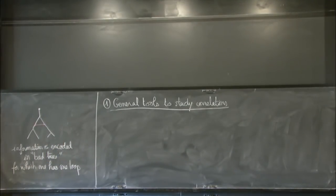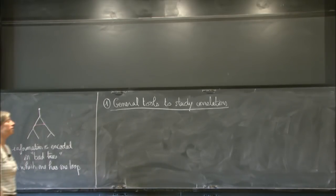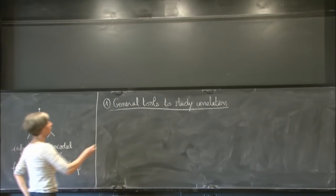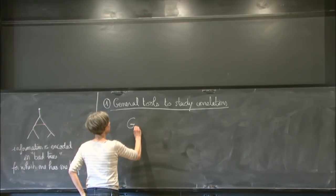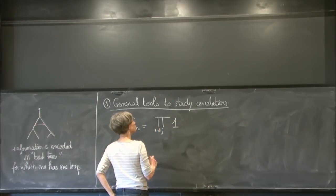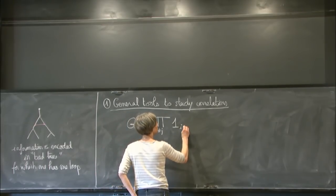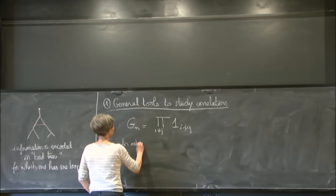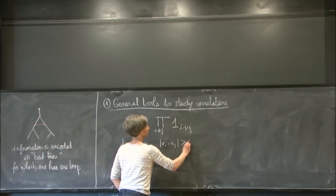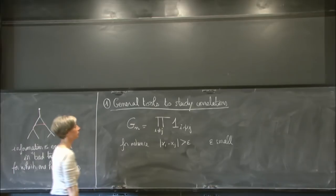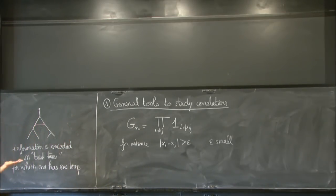I will start with the simplest possible example — without dynamics, without anything like this — actually related to the initial data. So assume you have a system of hard spheres and you are interested in the function g_N, which is the product over all i different from j of the indicator function that i is not close to j. For instance, this can mean that the distance |x_i − x_j| is bigger than epsilon, where epsilon is small.